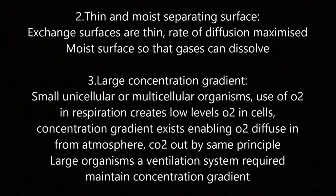Factor 2 is a thin and moist separating surface. Exchange surfaces are thin to maximise the rate of diffusion, and moist so that gases can dissolve. Factor 3 is a large concentration gradient. Small unicellular or multicellular organisms use O2 in respiration, creating low levels of O2 in cells. A concentration gradient exists enabling O2 to diffuse from the atmosphere and CO2 to diffuse out by the same principle.